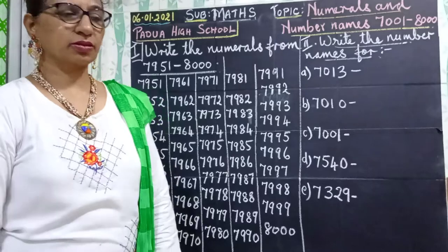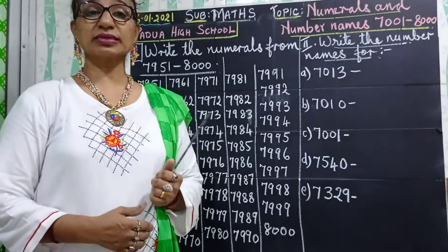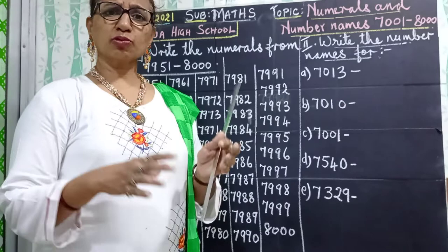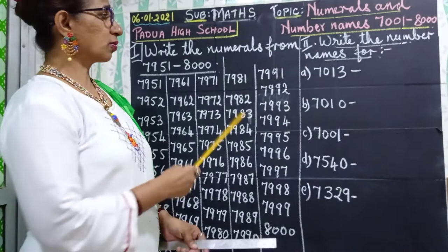Hello children, today we are going to learn our numerals and number names from 7001 to 8000. By now you know how to write your numerals, so it is just for you to understand how to go about. So let us just revise.